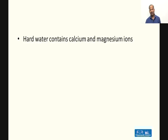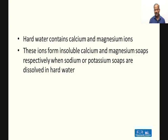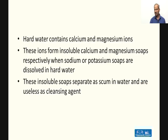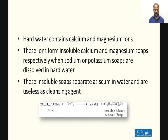Hard water contains calcium and magnesium ions — soluble chlorides and bicarbonates of calcium and magnesium — responsible for hardness. These calcium and magnesium ions form insoluble calcium and magnesium soaps when sodium and potassium soaps are dissolved in hard water. These insoluble soaps separate as scum and are useless as cleansing agents; insoluble calcium stearate precipitates as scum and can also stick to the fabric.